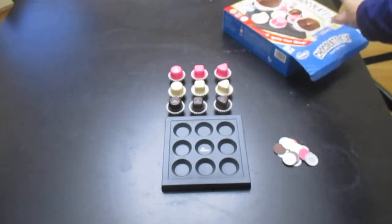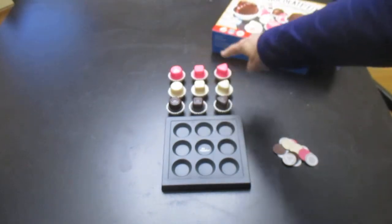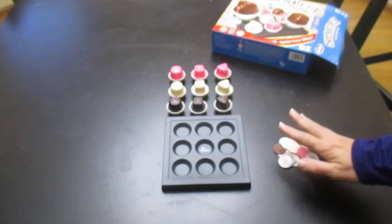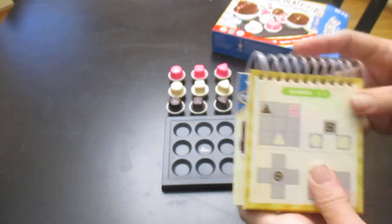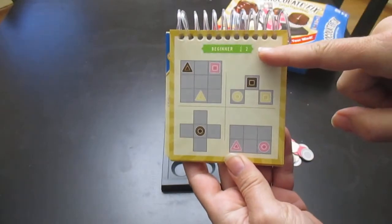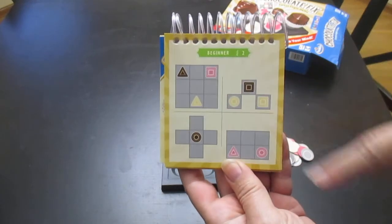So the game consists of nine different chocolate pieces, a playing board, and placeholders. The way that you play this game is there is a puzzle book and on the front of the puzzle book are clues of how you place the pieces.